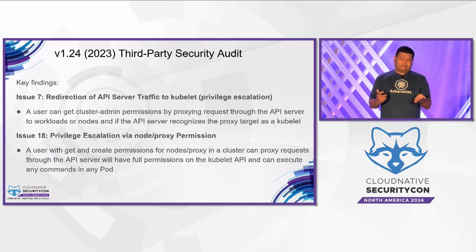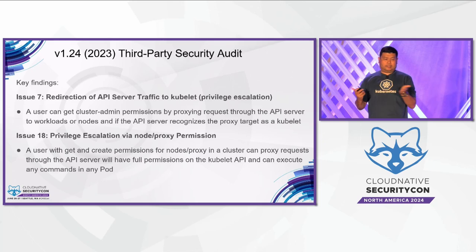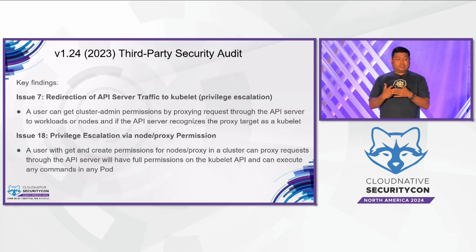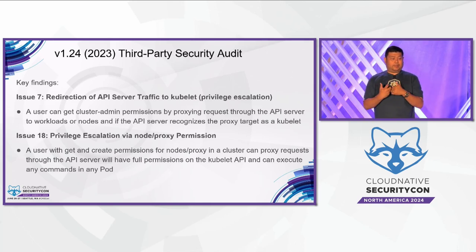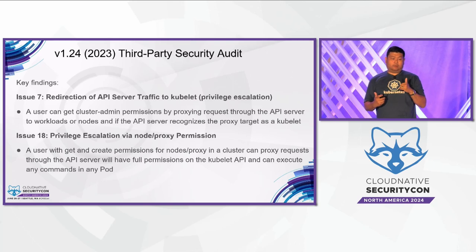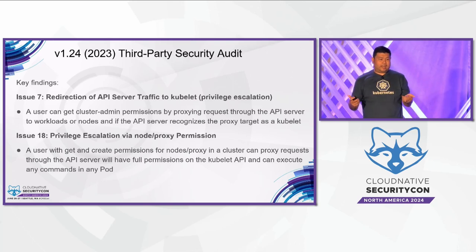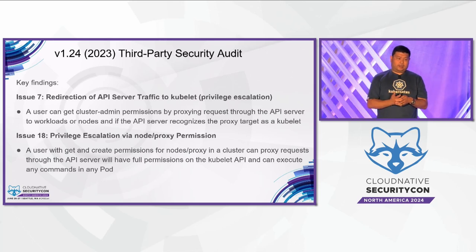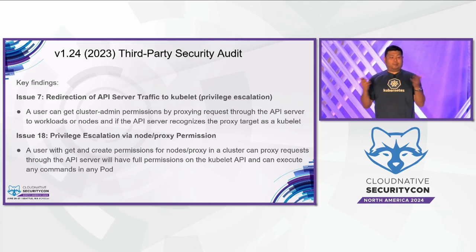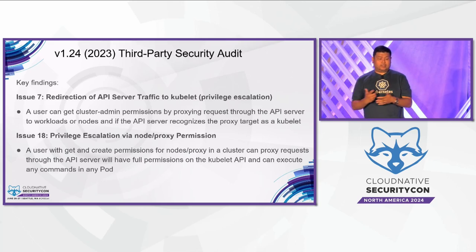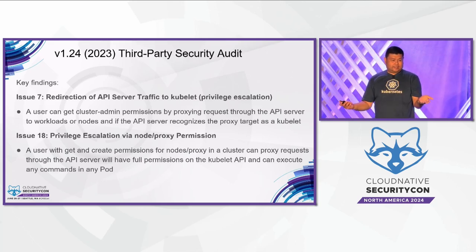The last finding is privilege escalation via node proxy permission, also reported in a blog post from AquaSec and by NCC Group. A user without the proper permissions can execute any commands they want on any running pods by using a proxy request through the API server to a kubelet. The API server uses its own client certificate to authenticate, and the user then has full permissions on the kubelet API, allowing them to execute any command on the running node. These privilege escalation examples from the 2023 audit come with recommendations on how to prevent them — I suggest everyone read the audit findings on GitHub at kubernetes/sig-security.